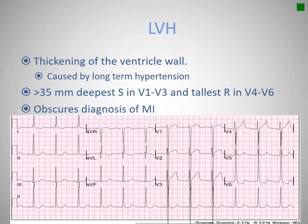Left ventricular hypertrophy is worth noting because it's a progressive disease — you don't end up with LVH overnight. It's a thickening of the ventricle wall caused by long-term hypertension, and you can see it on V1 through V6 on your 12-lead. If you have a measurement greater than 35 millimeters from your deepest S wave in V1 to V3 or your tallest R wave in V4 to V6, that is LVH by voltage criteria. It can obscure the diagnosis of a myocardial infarction in those leads, so essentially the only MI you can diagnose in the presence of LVH is an inferior wall.